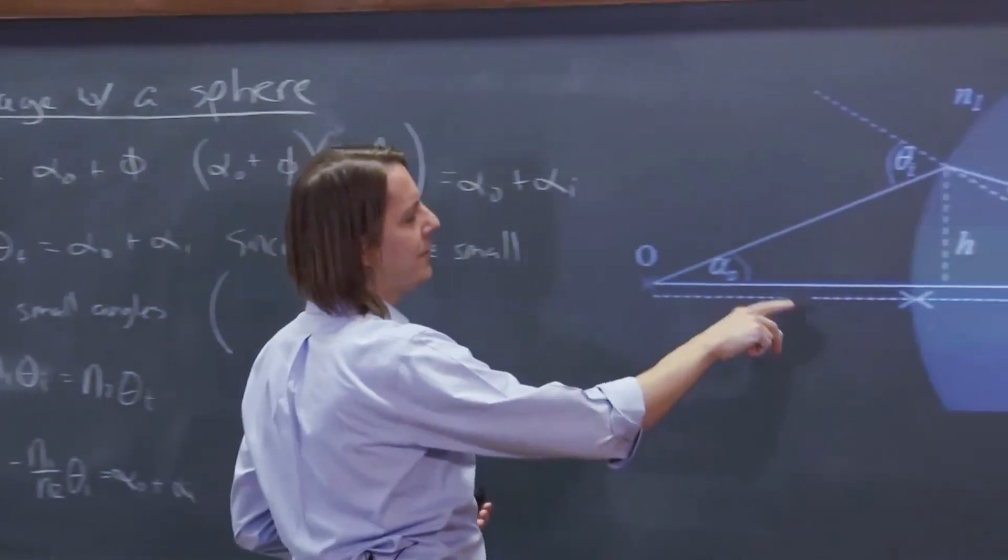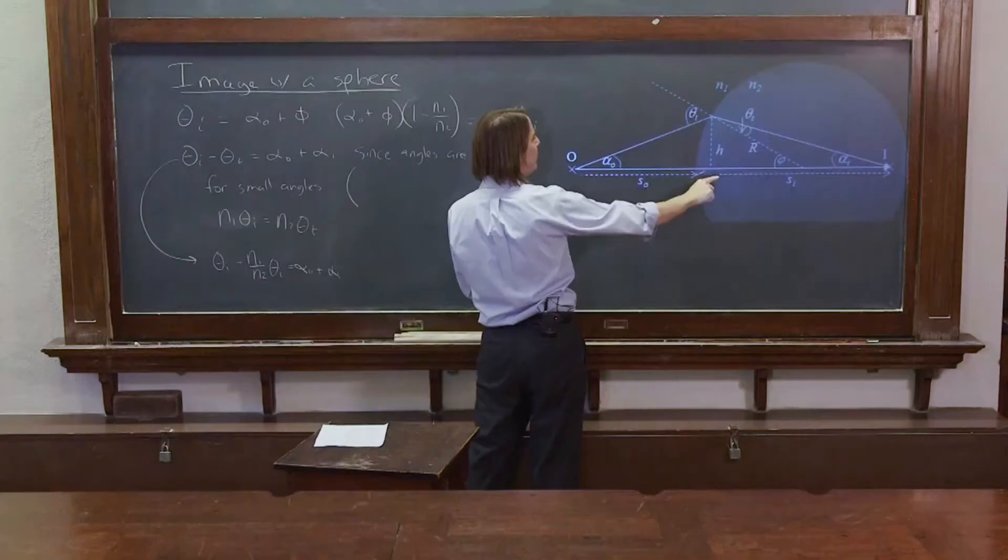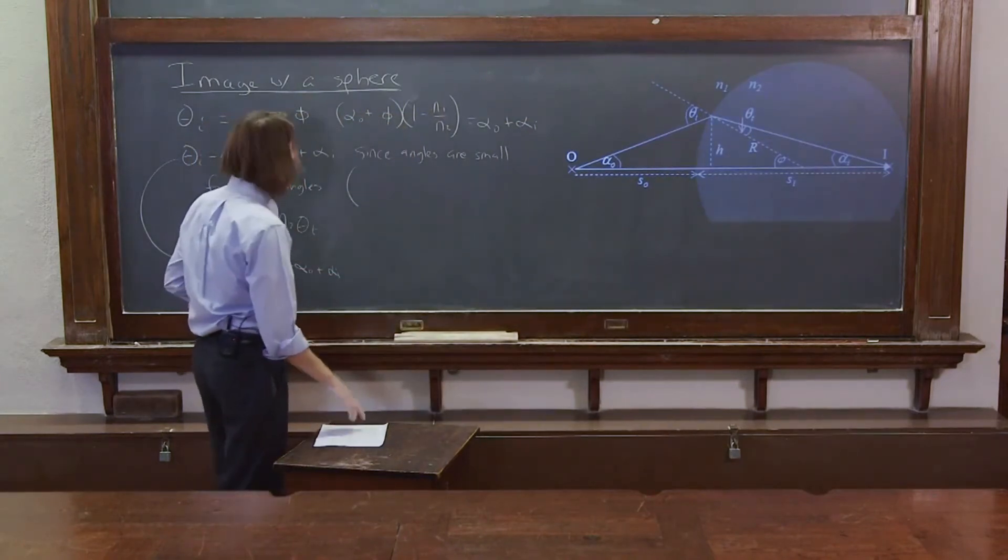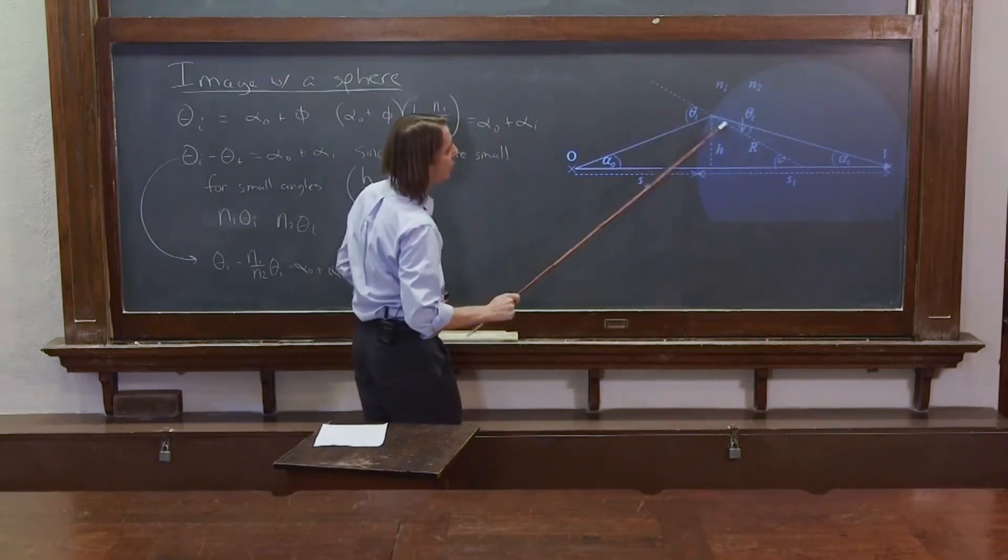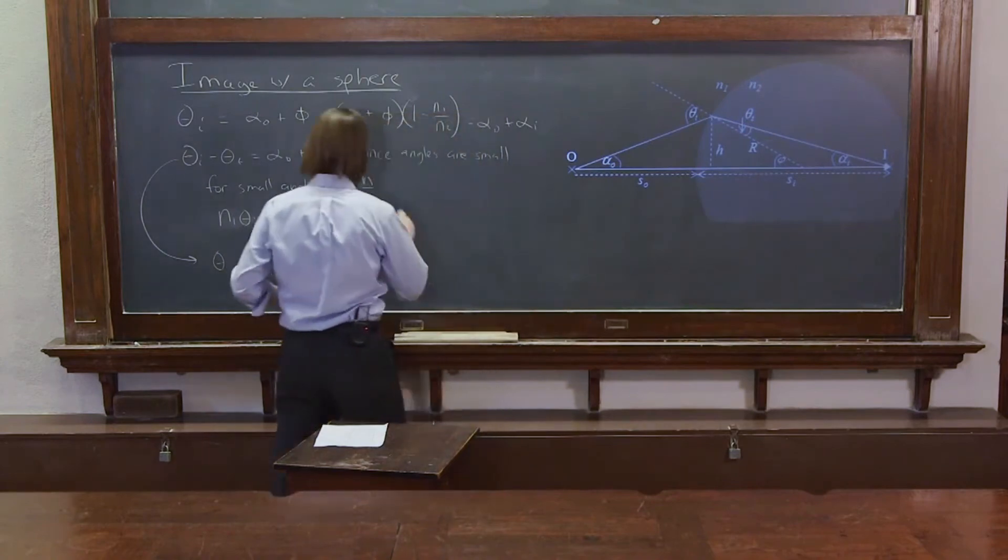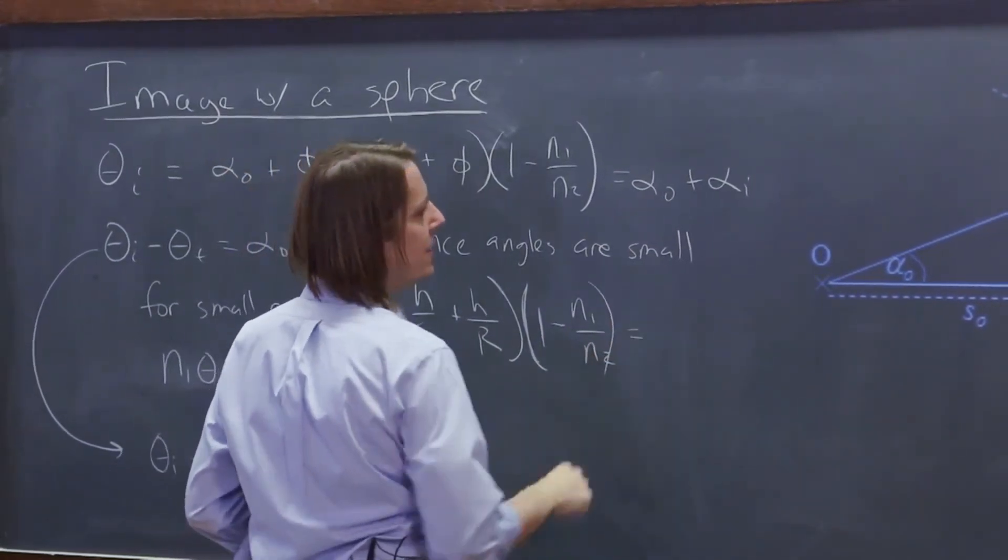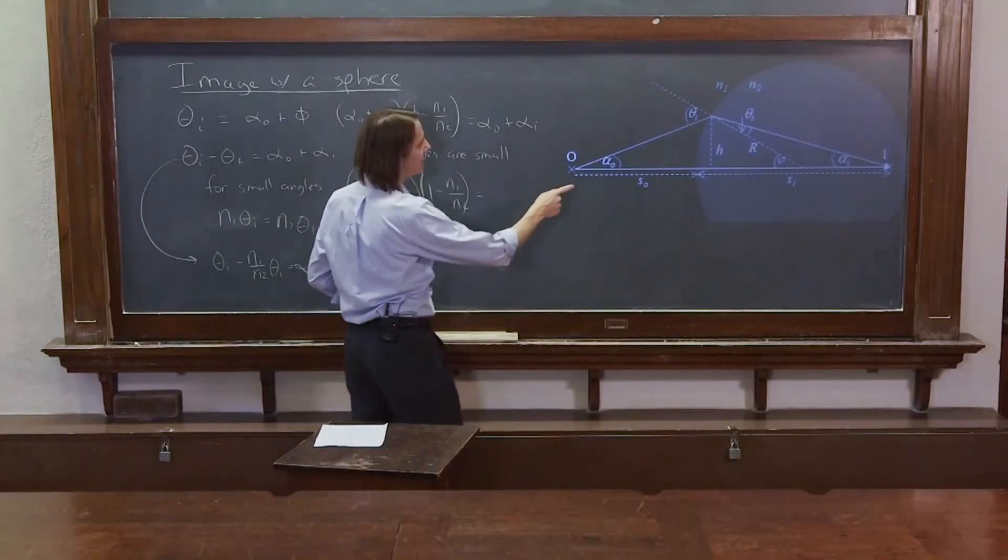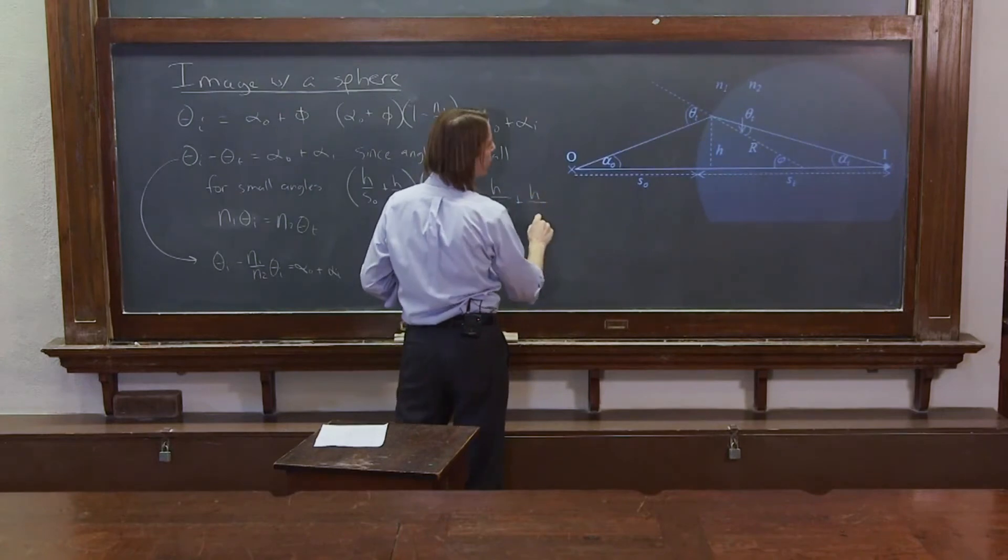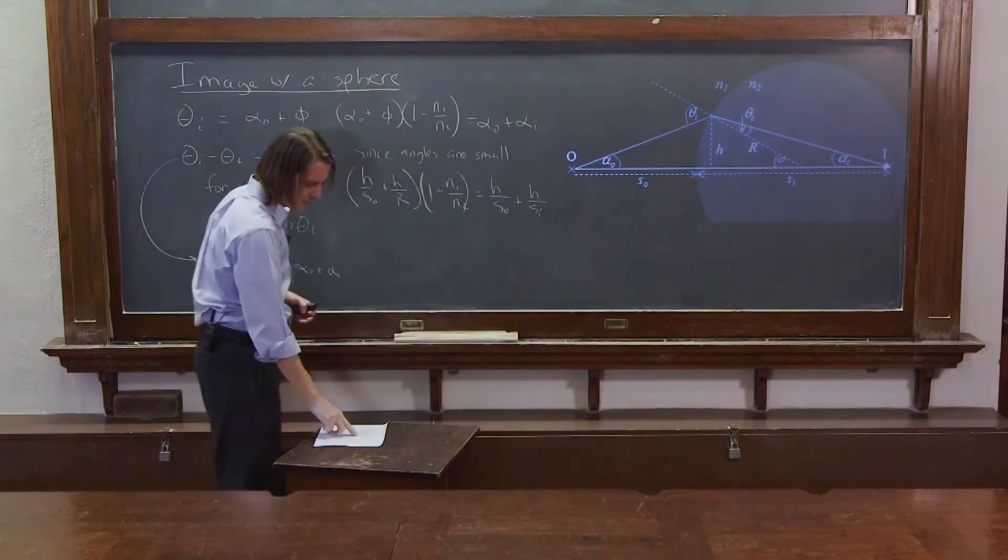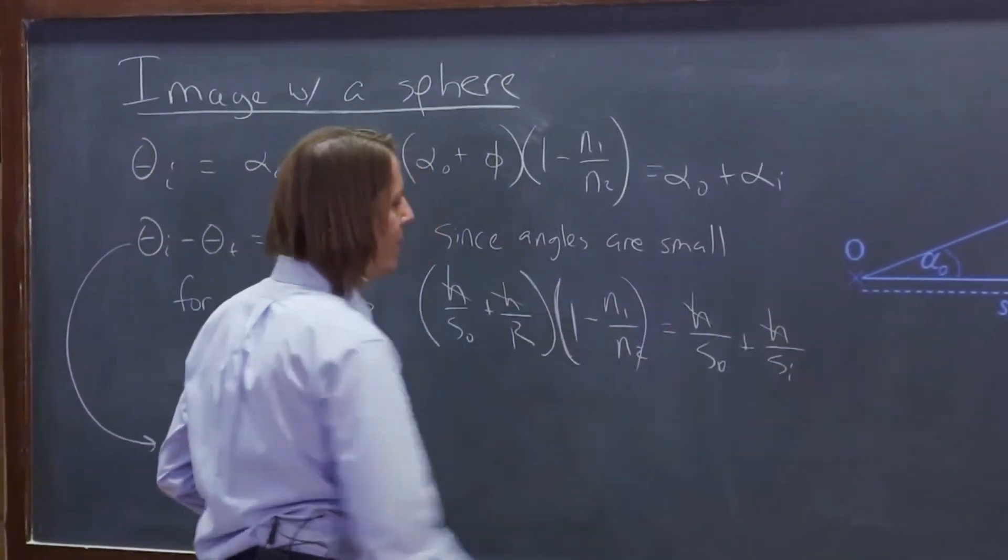And so now we can rewrite all of these angles in terms of distances. Alpha naught. What is alpha naught? So whenever you have a small angle, you can just say it's equal to the part on the other side opposite the angle H. And since it's small, you could put it over this distance or this distance. You can put it over really either one because for a small angle, those are basically the same. So it's going to be H over S naught plus phi. And let's see. Phi is H over R. So SI is too long. It's H over R times 1 minus N1 over N2. Equals alpha naught, which we already did, is H over S naught plus alpha I is H over SI approximately. All right. So now we want to simplify this. One thing you can do is pull an H. So the H's will come out of here. The H's will come out of here. All that stuff will cancel.